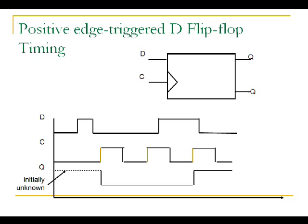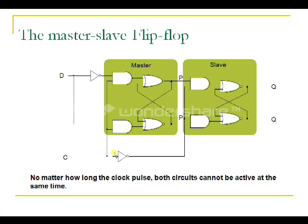Here is the master-slave D flip-flop. The output of the master is connected to the input of the slave flip-flop, and the clock of the slave is connected through an inverter. If a positive pulse is applied, the master processes the inputs; at that same time, the slave receives the inverted negative pulse and is in an idle state. Then the output of the master is processed by the slave when the slave receives a positive pulse from the inverted clock. At any given time, both master and slave are not working simultaneously — no matter how long the clock pulse, both circuits cannot be active at the same time.